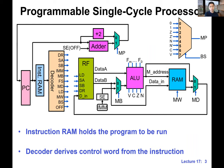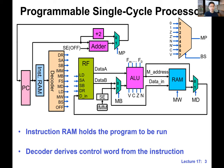The decoder will decode instructions into a set of control words — this is the set of control signals. We expect the data path, the ALU, and all these elements to do the right thing at the right moment. This is basically the building blocks we have learned, and this is something that's totally programmable. We can load a different program, the PC will do the update, either increment or branch, and it's going to happen automatically and correctly.